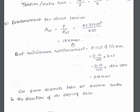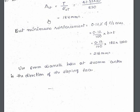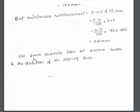After getting the tension, we find the reinforcement using AST = T / (sigma_st), where sigma_st is 230 N/mm². Substituting all values, we get AST = 184 mm². We check this against the minimum reinforcement, which is 0.12% of the cross-sectional area = 216 mm². Since the minimum is greater than what we calculated, we must provide the minimum reinforcement: 6 mm diameter bars at 240 mm center-to-center in the direction of the sloping faces.